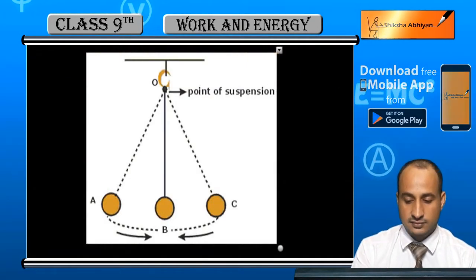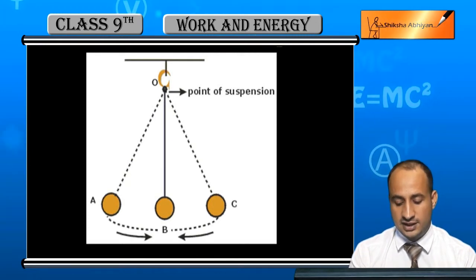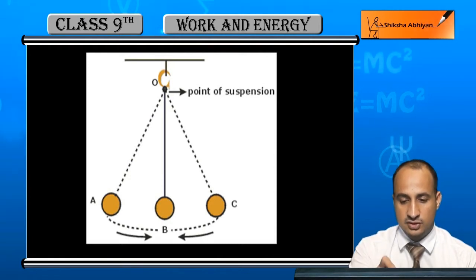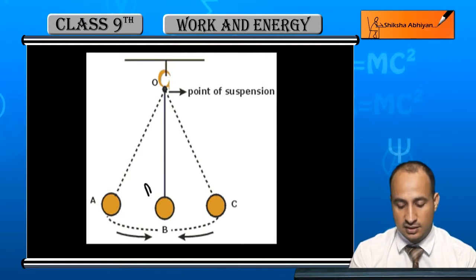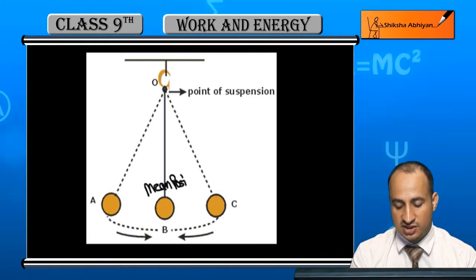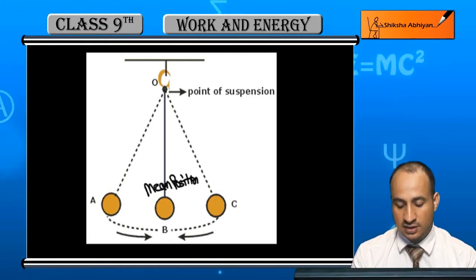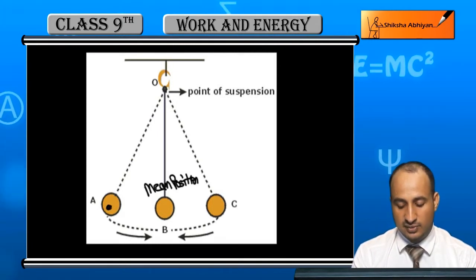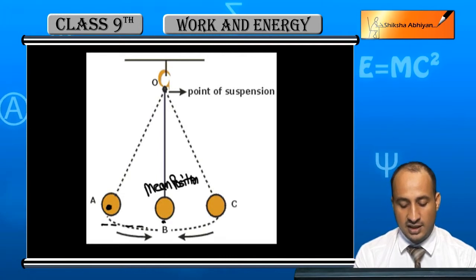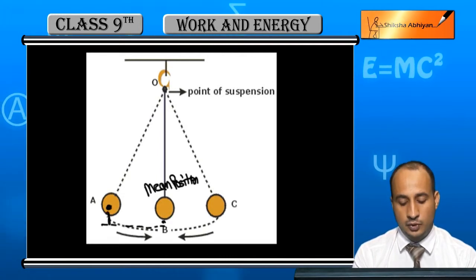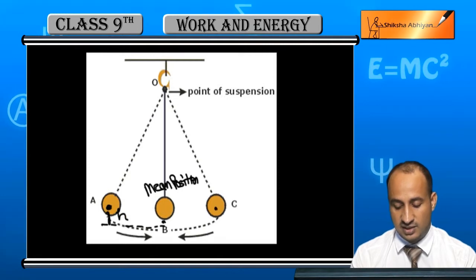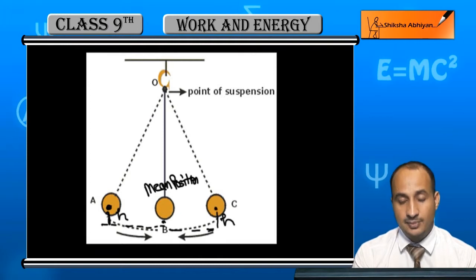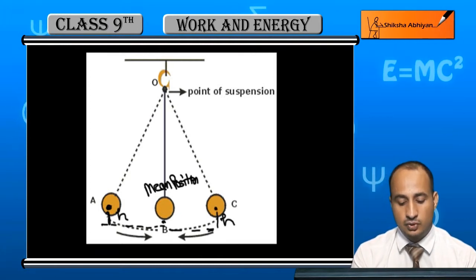This is called the mean position. Above the mean position — when the bob moves — this is the extreme position. The highest point on top is here. Points A and C on the edge are the maximum extreme positions.